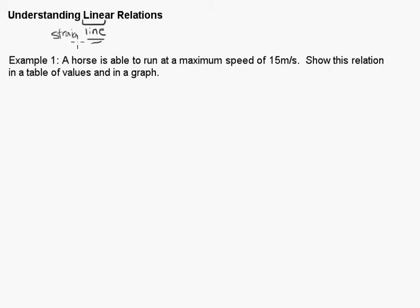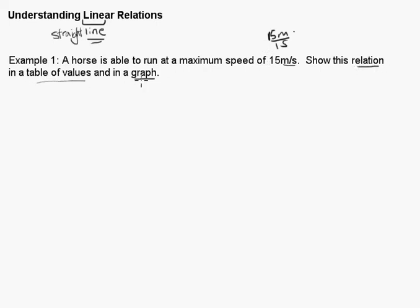So that's what a linear relation is — it's something that's going to produce a straight line on a graph. Let's look at an example. A horse is able to run at a maximum speed of 15 meters for every second. So 15 meters per second means in one second it can travel 15 meters. We want to show this relation in a table of values and in a graph.